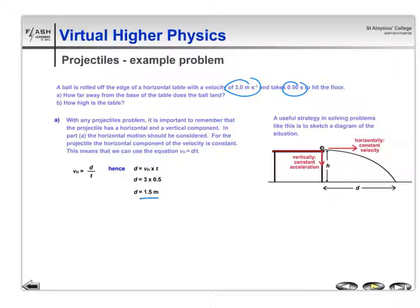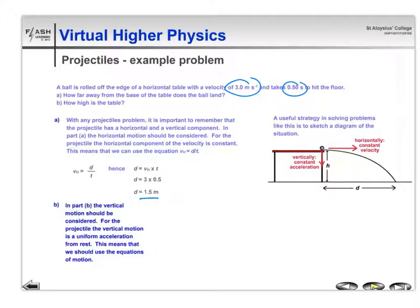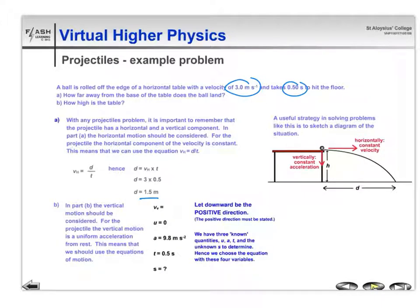If we now look at the vertical motion of the object, we don't actually appear to know very much about the vertical motion. If we think about it, we do know that it's accelerating. When we're listing our variables for that, it's going to involve uvast or suvat, whatever way you'd memorize it. In this case, all we're given in the question is that t is 0.5 seconds.